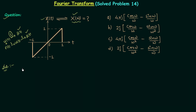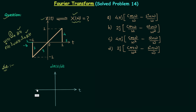We will first differentiate signal x(t) to get dx(t)/dt. Signal x(t) has five straight lines. The first line, from minus infinity to minus one, has a slope equal to zero, so dx(t)/dt is equal to zero in that region.